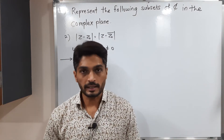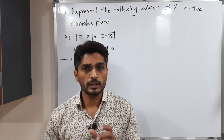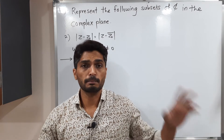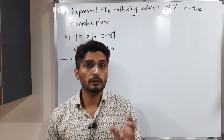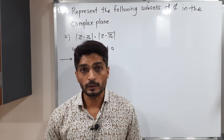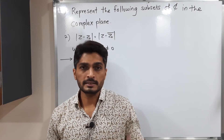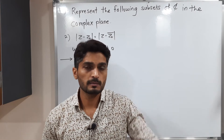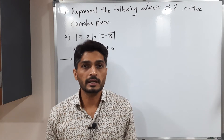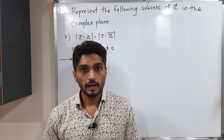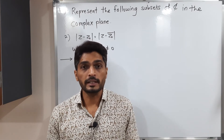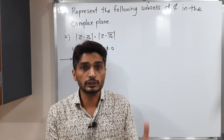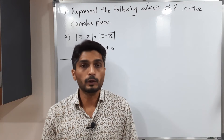Let us discuss the second example. What is given? mod(Z − Z₀) = mod(Z − Z̄₀), where the imaginary part of Z₀ is not equal to 0. Z represents any complex number and Z₀ is any fixed complex number. We have to find whether it represents a circle, parabola, ellipse, straight line, or some region.